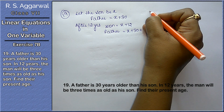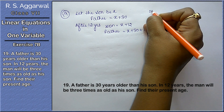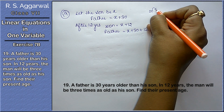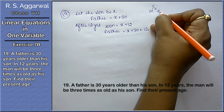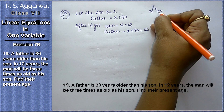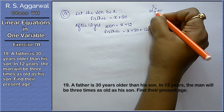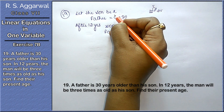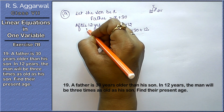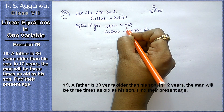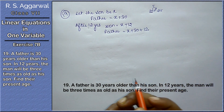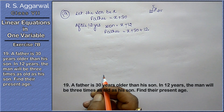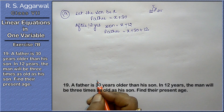For example, if my age is 20 years today, then after 5 years my age will be 25 — that means we add 5 to the present age. So if the present age is x, then after 12 years the age will be x plus 12. Now, a father is 30 years older than his son; in 12 years the man will be...